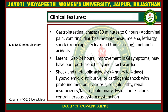The clinical features include: first, the gastrointestinal phase, lasting 30 minutes to 6 hours, with symptoms of abdominal pain, vomiting, diarrhea, hematemesis, lethargy, and shock from capillary leak, as well as metabolic acidosis. Then the latent phase, about 6 to 24 hours, where improvement of gastrointestinal symptoms may mask poor perfusion, tachycardia, and tachypnea. Then the shock and metabolic acidosis phase, from 4 hours to 4 days, which includes hypovolemic, distributive, or cardiogenic shock with profound metabolic acidosis, coagulopathy, adrenal insufficiency, severe pulmonary dysfunction, and systemic organ dysfunction.